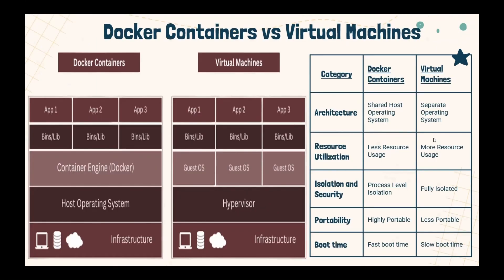Let's understand the difference between Docker containers and traditional virtual machines. Docker containers share the host operating system kernel and are suited for running multiple applications over a single OS. Whereas virtual machines run over a hypervisor that emulates an entire operating system including the kernel, and are suitable for applications that require a separate dedicated OS. Regarding resource utilization, containers are more lightweight than VMs because they do not require a separate guest OS. Multiple containers can run on a single host, whereas VMs have their own guest OS which consumes additional resources and limits the number of VMs on a single host.